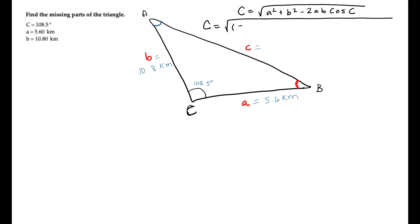So what I'm going to do is plug in all that I know into the formula. Side A is 5.6 and I'm going to square it. Side B is 10.8 and I'm going to square it, minus 2 times 5.6 times 10.8, and then cosine of 108.5 degrees.